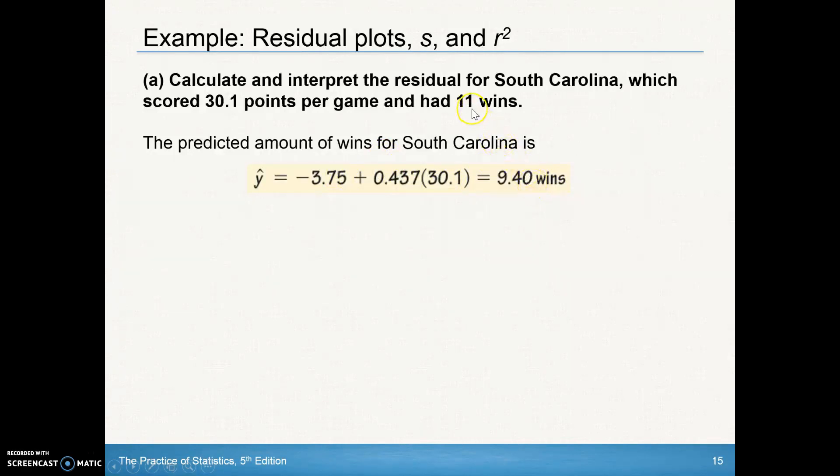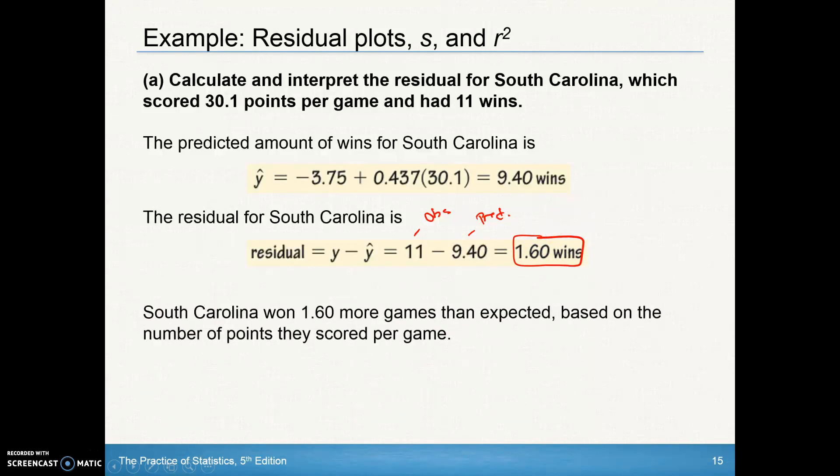They had 11 wins. So the residual is taking that observed value, that 11, the observed value minus the predicted value. And there's our residual. South Carolina won 1.60 more games than expected, based on the number of points they scored per game, by using that regression equation.